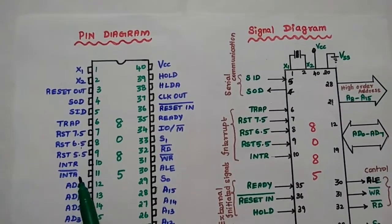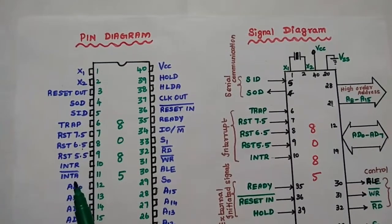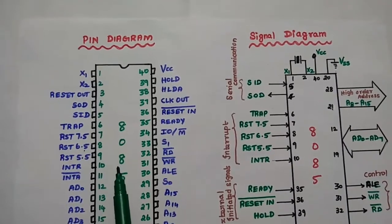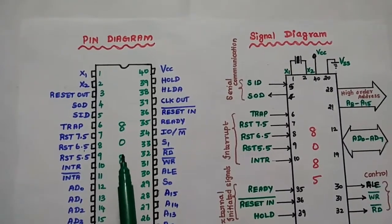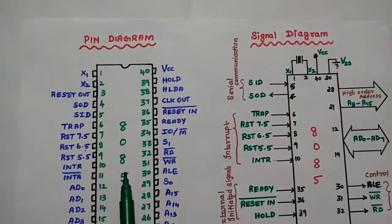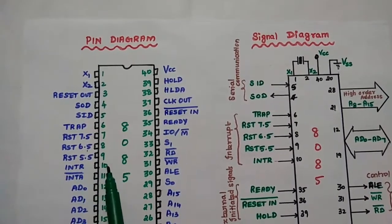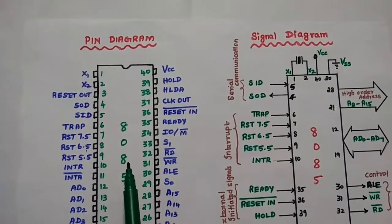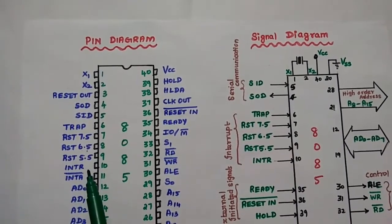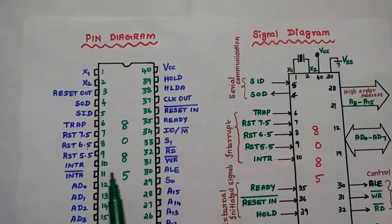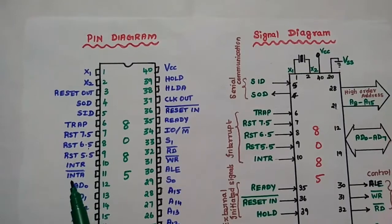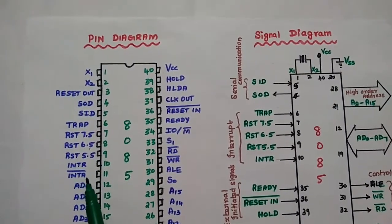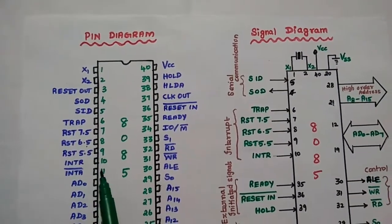The next one is INTA bar, which means interrupt acknowledgement. Whenever the 8085 processor receives an interrupt request, if it is ready to accept that interrupt, it sends an acknowledgement — that is INTA, interrupt acknowledgement.